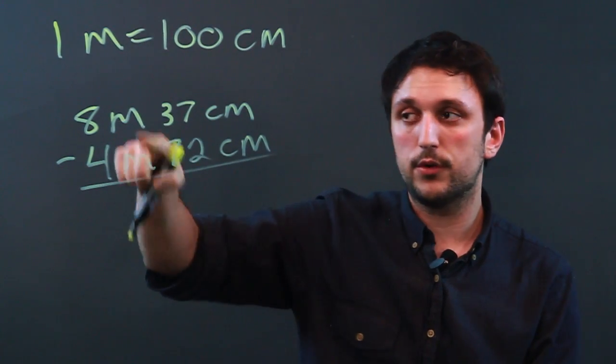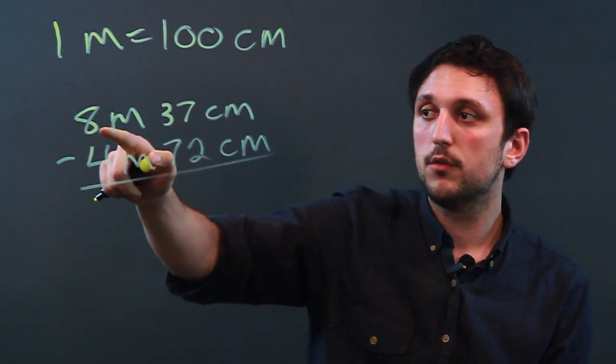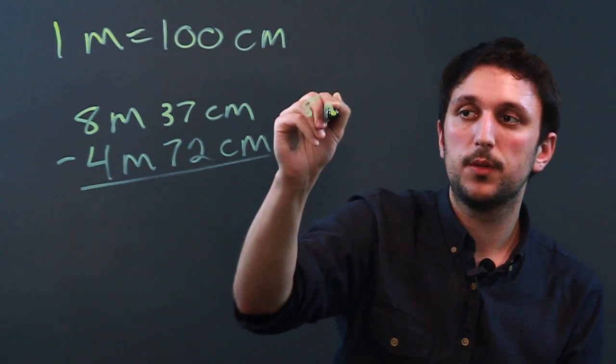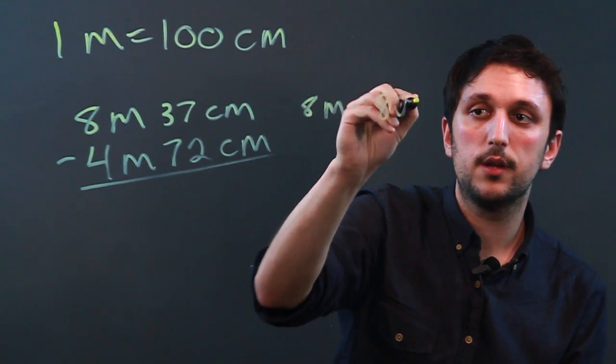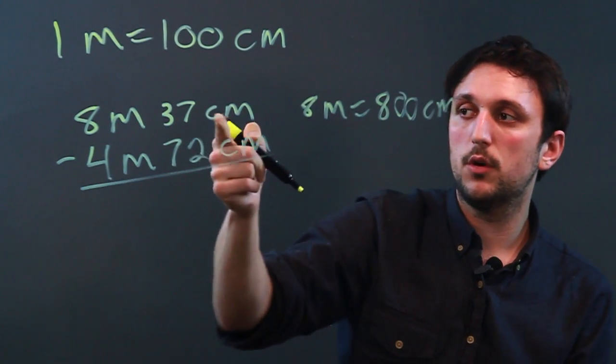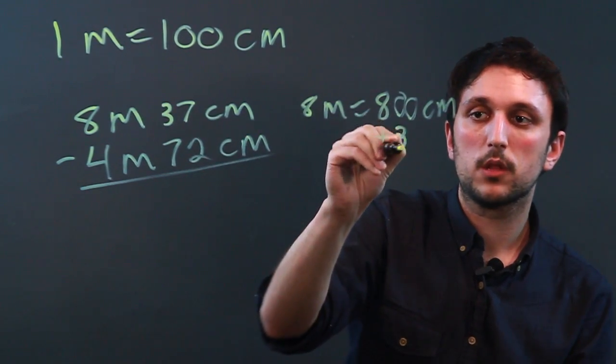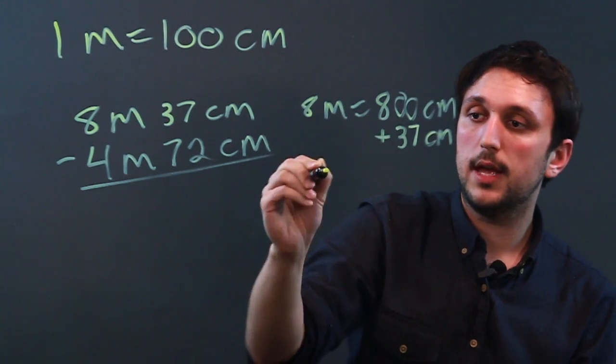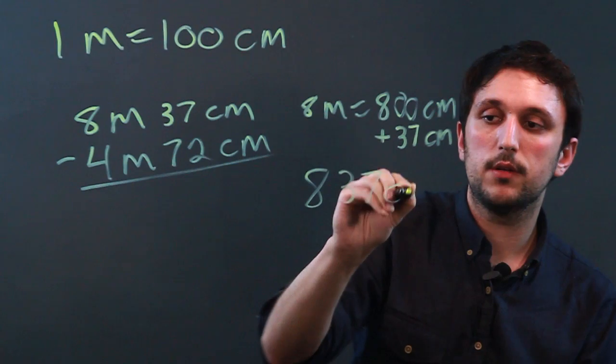Well we can't do it directly but we can convert. So eight meters equals 800 centimeters so plus 37 would be 837 centimeters.